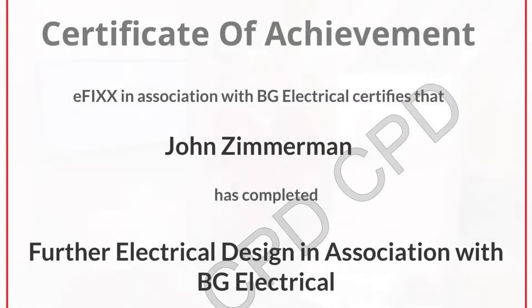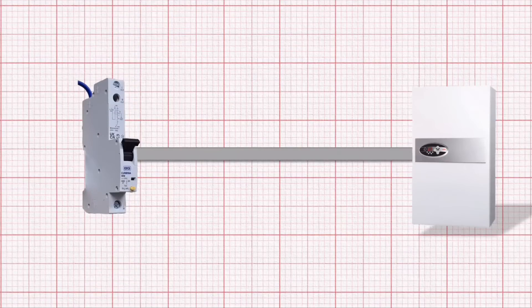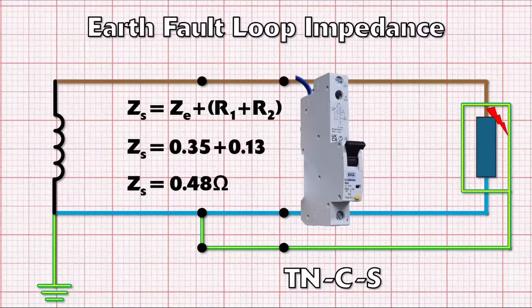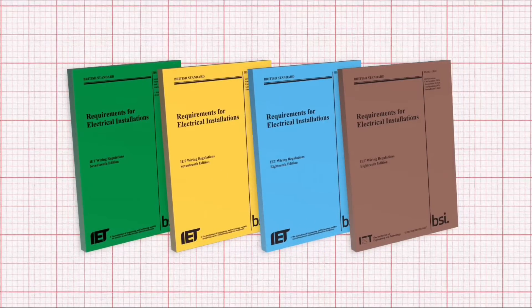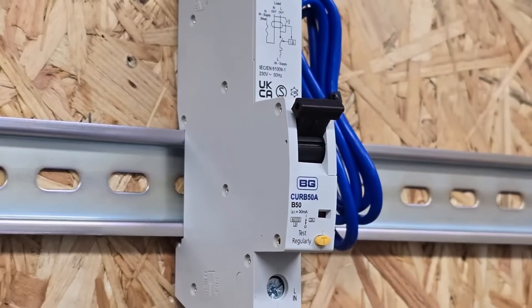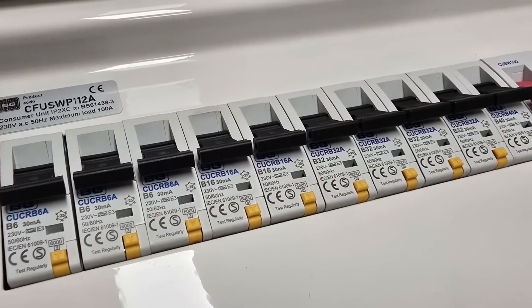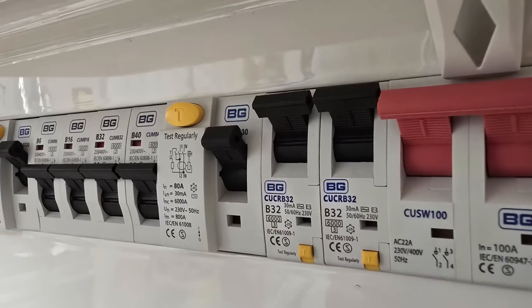You'll receive a certificate to prove you've completed the course. Throughout this design process we've protected our circuit using an MCB and based all our calculations around that - but does our circuit need RCD protection, and if so how does that affect our carefully crafted calculations, particularly when it comes to earth fault loop impedance? The last few amendments of the wiring regs have increased the stringency of requirements for RCD protection, and it's becoming increasingly common for circuits to be protected by an individual RCBO. While the gold standard is individual RCBOs, split load boards can still be made compliant.